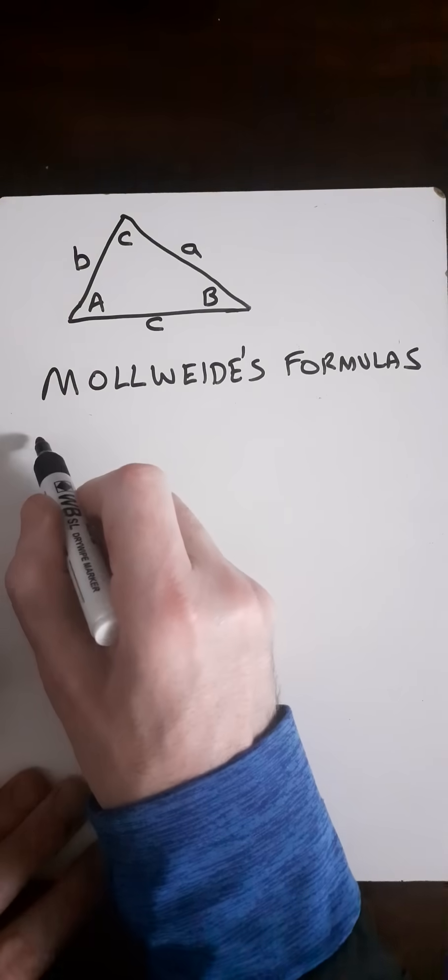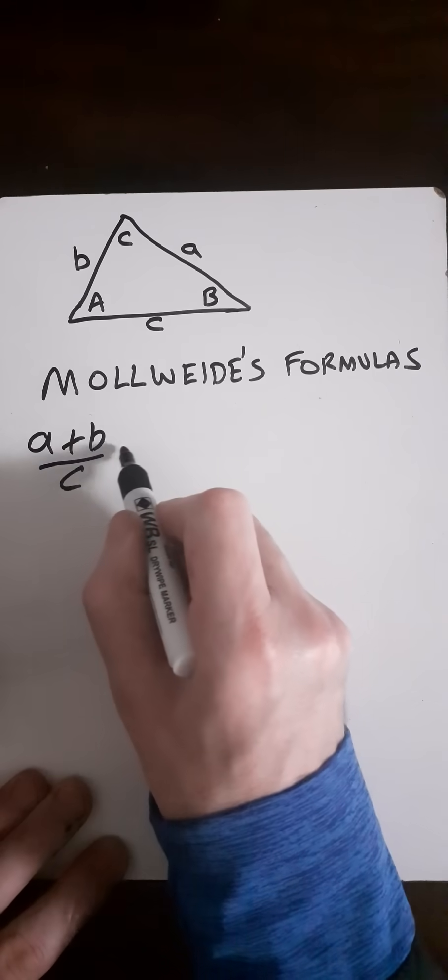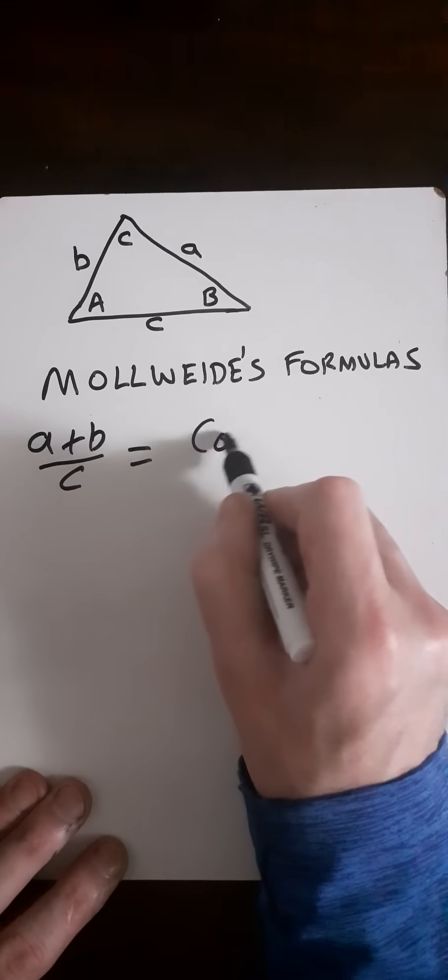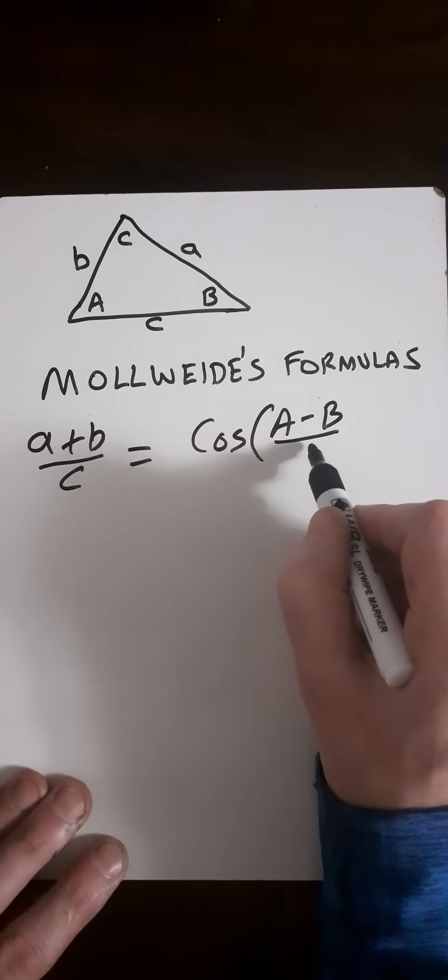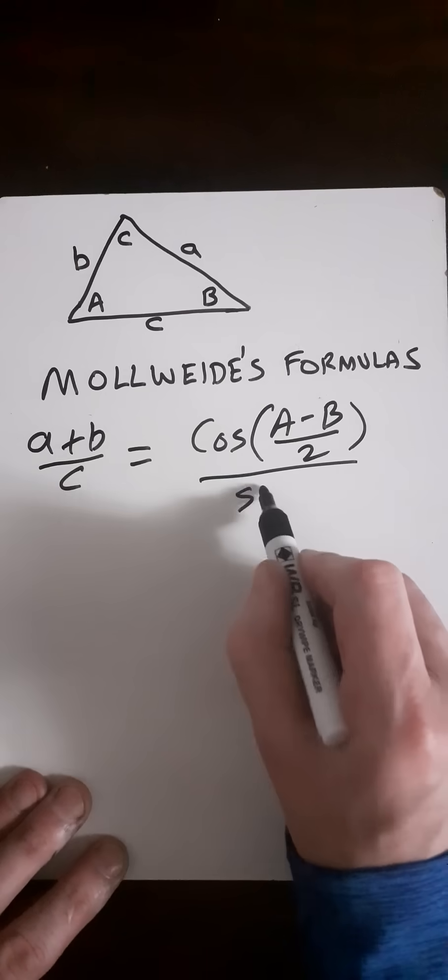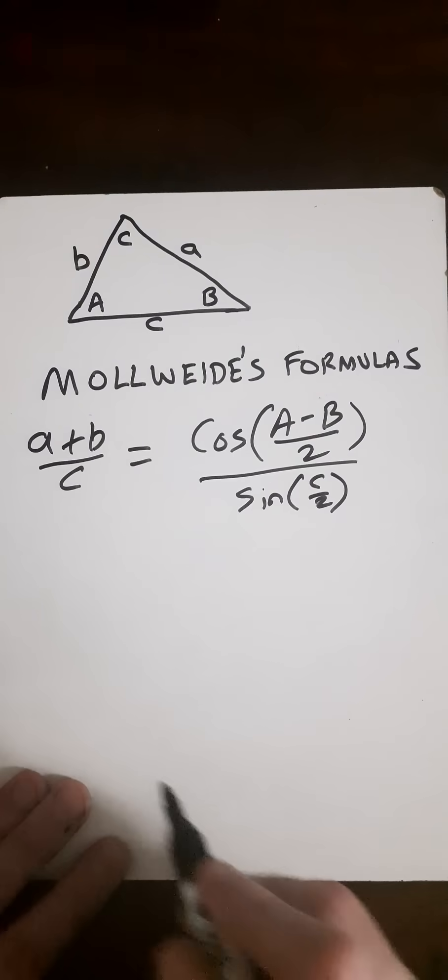So we can say, using Mollweide's formulas, that (a+b)/c is equal to cos((A-B)/2) divided by sin(C/2).